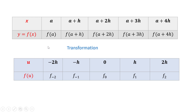Following this notation, instead of f(a+2h) we write f(u), instead of f(a+3h) we write F1, and instead of f(a+4h) we write F2.